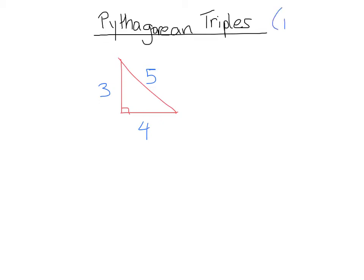If it's a right triangle, super important there, and also we have integer sides, then we have here a Pythagorean triple. It has to have those two conditions.